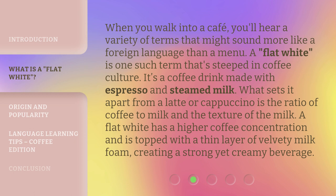When you walk into a cafe you'll hear a variety of terms that might sound more like a foreign language than a menu. A flat white is one such term that's steeped in coffee culture. It's a coffee drink made with espresso and steamed milk. What sets it apart from a latte or cappuccino is the ratio of coffee to milk and the texture of the milk — a flat white has a higher coffee concentration and is topped with a thin layer of velvety milk foam, creating a strong yet creamy beverage.